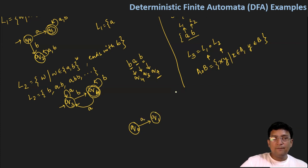And if my string starts with B, I should move to q2 state, which is a non-final state. If I get A or B, I should remain at the non-final state only. So if my string has started with A, and after this, my string should end with B.